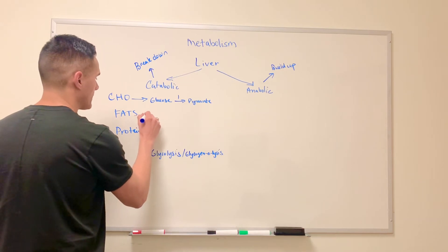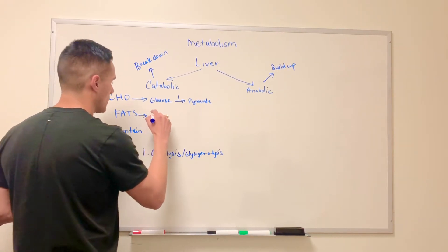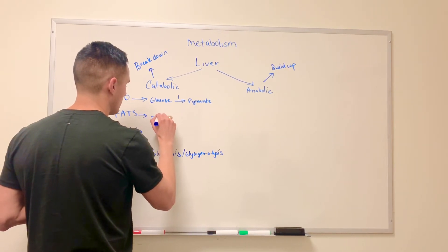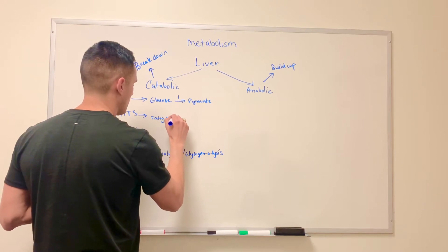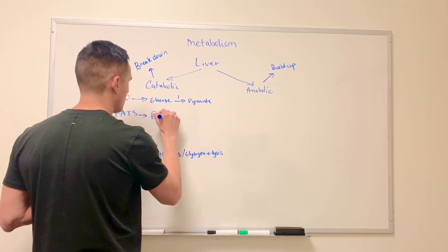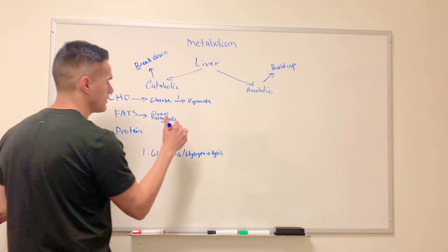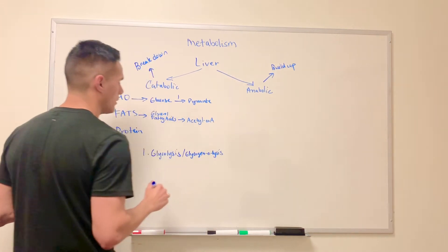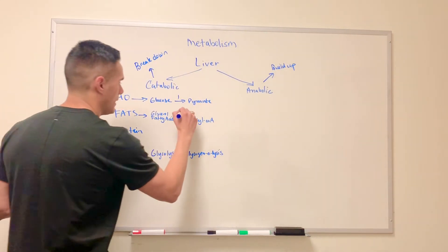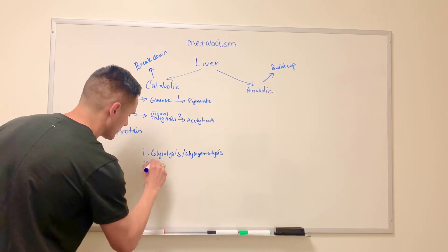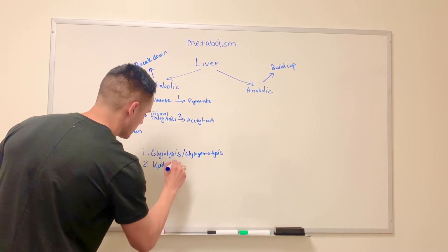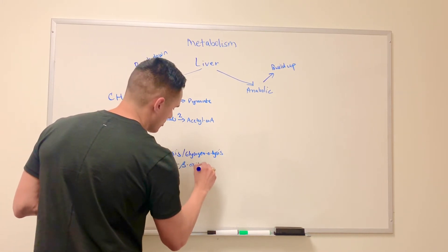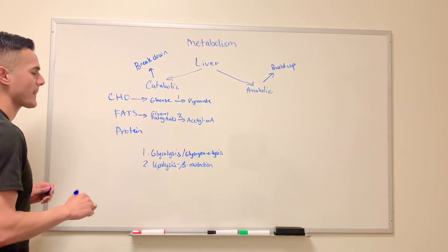And so what about fats? With fats, fats are broken down into fatty acids and also glycerol. So these fatty acids can be converted to a molecule known as acetyl-CoA. And this reaction, in general it's lipolysis, the lysing of lipids, but more specifically it's known as beta-oxidation.